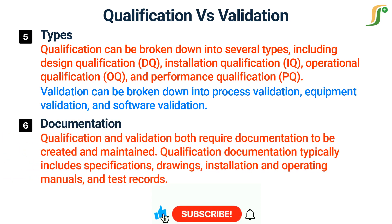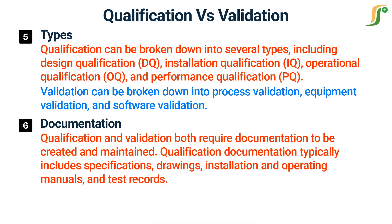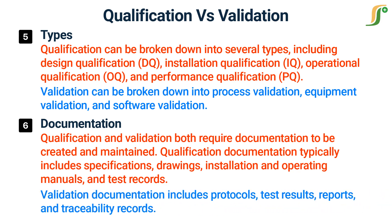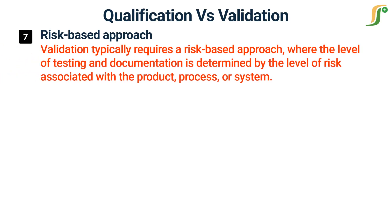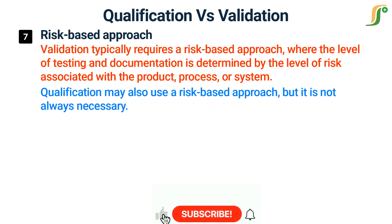Qualification and validation both require documentation to be created and maintained. Qualification documentation typically includes specifications, drawings, installation and operating manuals, and test records. Validation documentation includes protocols, test results, reports, and traceability records. Validation typically requires a risk-based approach, where the level of testing and documentation is determined by the level of risk associated with the product, process, or system. Qualification may also use a risk-based approach, but it is not always necessary.